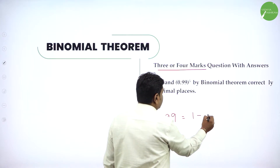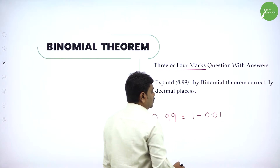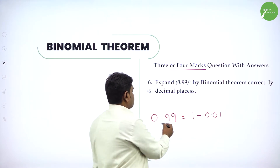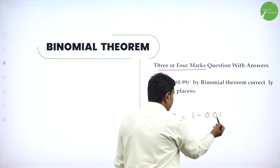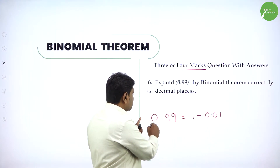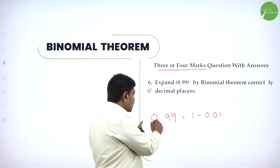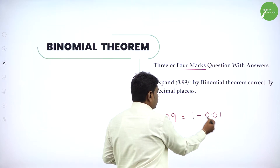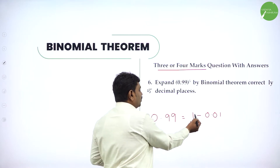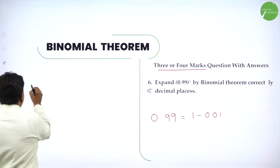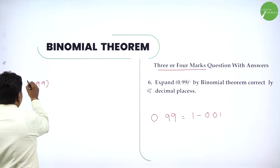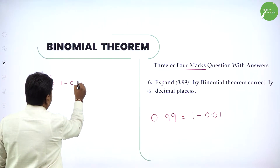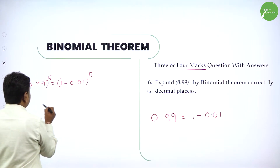Till 5 decimals you need to expand. So for this problem, 0.99 is near to 1. Can I write this as 1 minus 0.01? You can check using calculators so that you will not do any mistakes. 0.99 can be written as 1 minus 0.01. How? Simply do 1 minus 0.99, you get 0.01. So therefore 1 minus 0.01 gives you 0.99. Now 0.99 power 5 is the question, so I can write it as 1 minus 0.01 power 5.